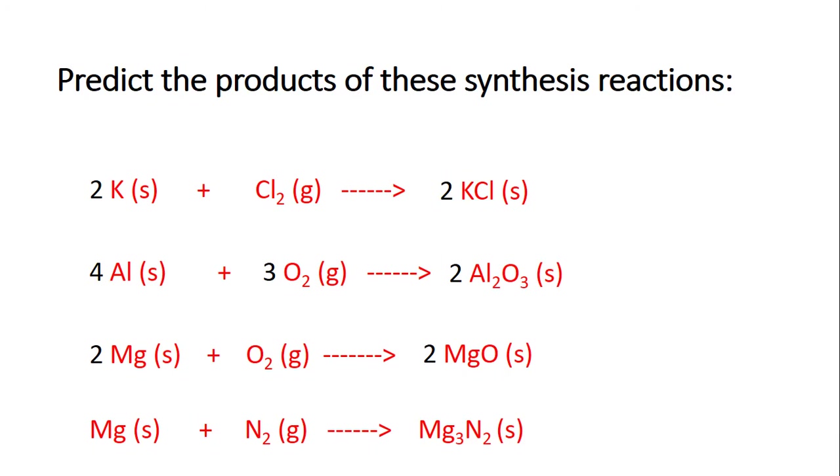That magnesium nitride would be in the solid state. Think about whether or not this equation is balanced. As I look at it, the nitrogens look okay—we've got two on the left and two on the right—but the magnesium would have to change, so I'm going to add a coefficient in front of the magnesium to make it look like this to get a balanced equation.